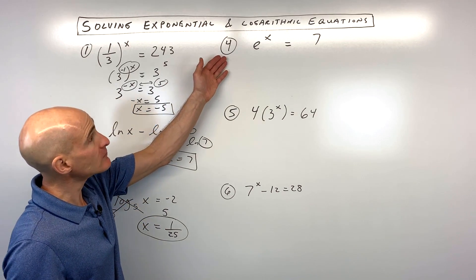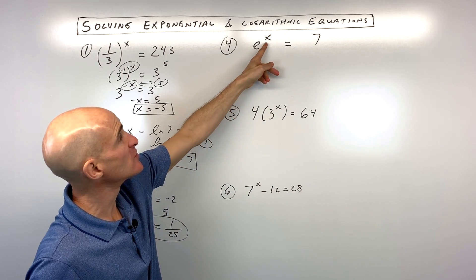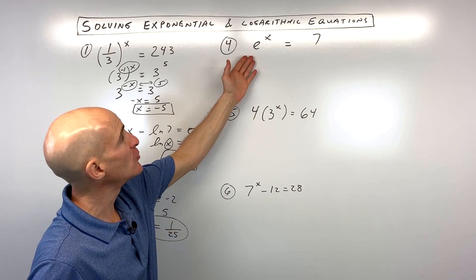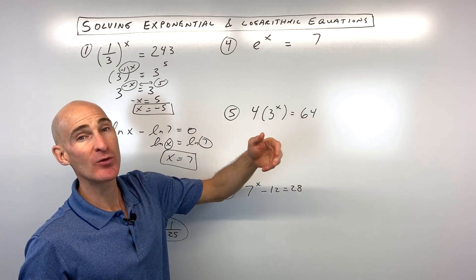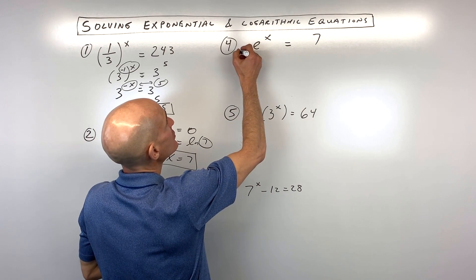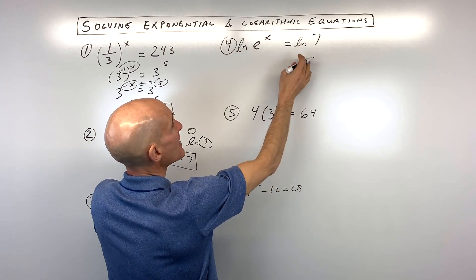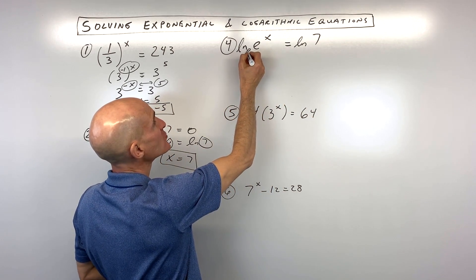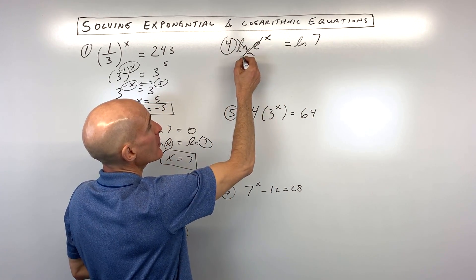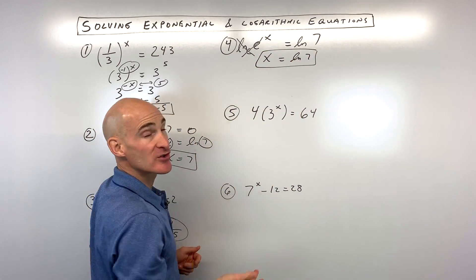For number 4, we've got e to the x equals 7. Because the variable is in the exponent position, we want to bring it down by doing the inverse of exponentiating — we take the natural log of both sides. Natural log is log base e, so these are inverses and cancel each other out. You have x equals natural log of 7. That's your final result.